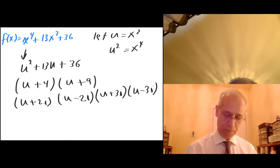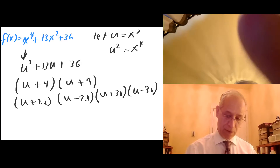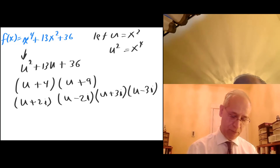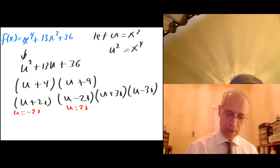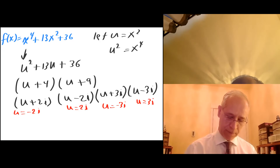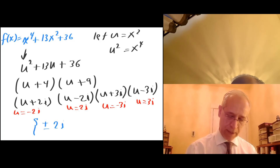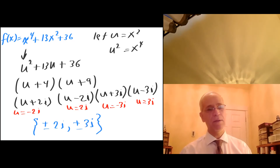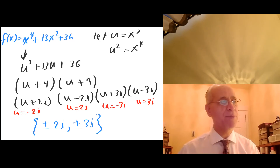Setting each factor equal to zero gives u equals minus 2i, u equals positive 2i, u equals negative 3i, and u equals positive 3i. So the zeros are plus and minus 2i and plus and minus 3i — just like we found on the previous page.